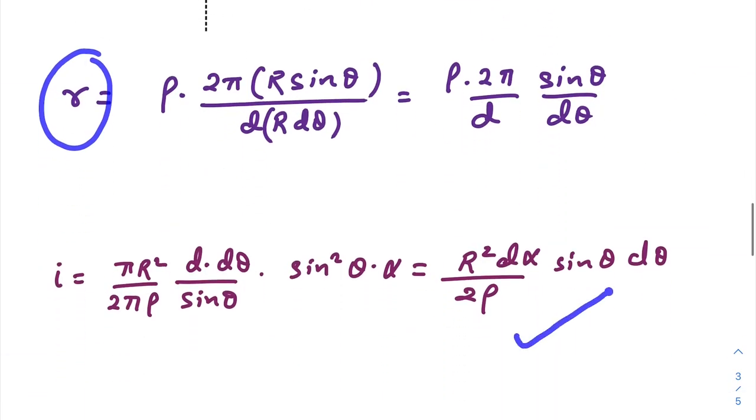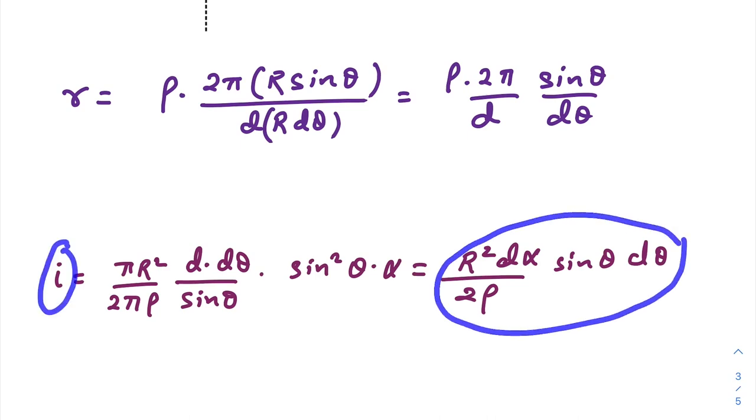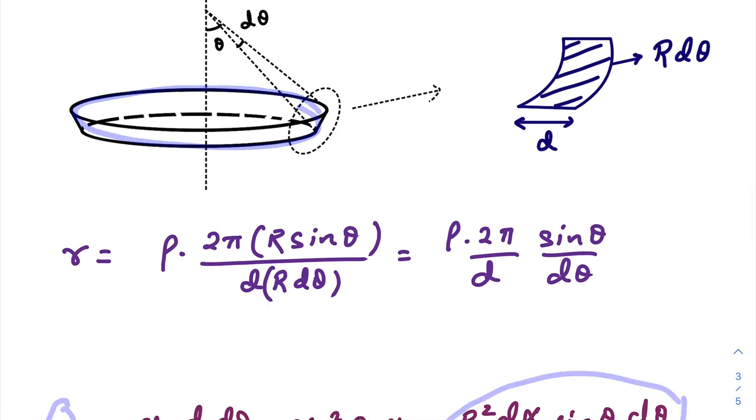Now just use this value of R and plug it here, we will get this one. So this is the expression for the current flowing through that infinitesimally small circular loop.